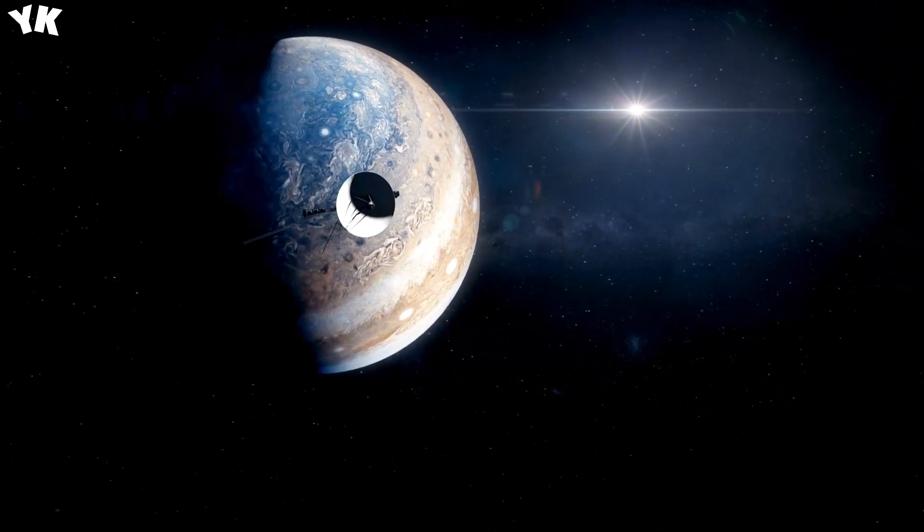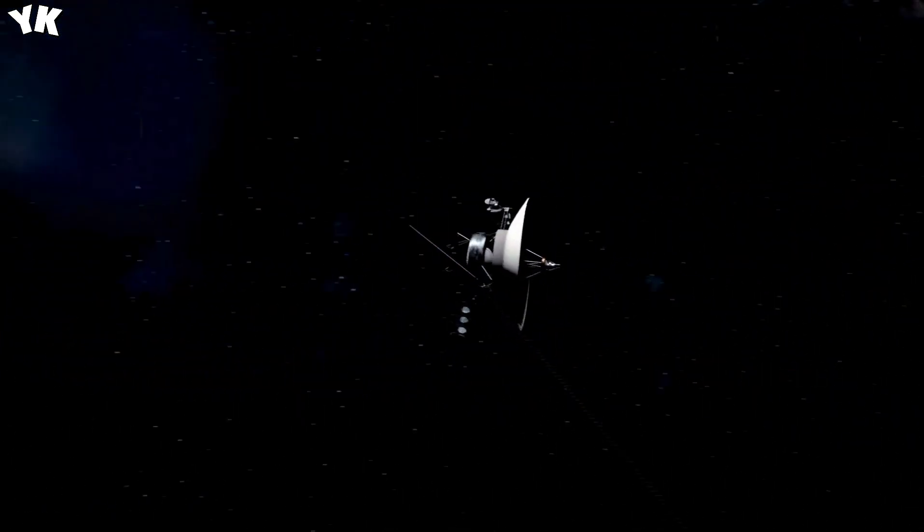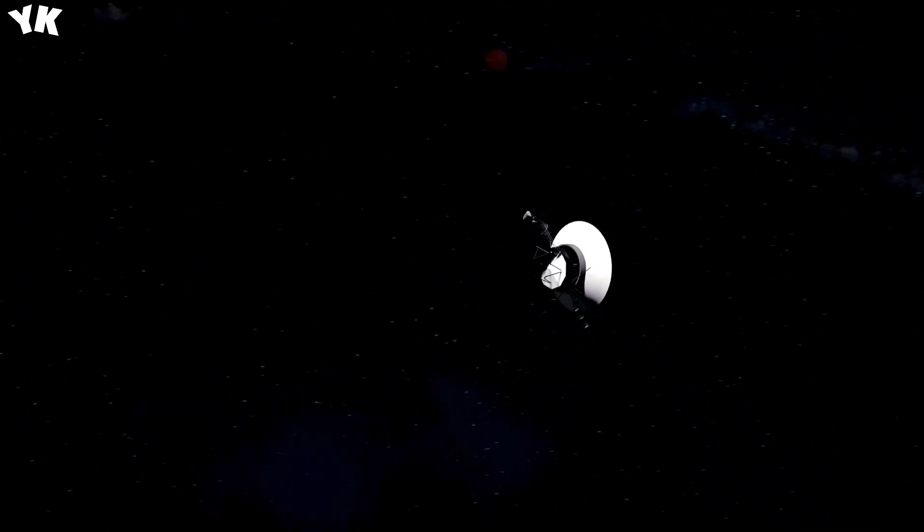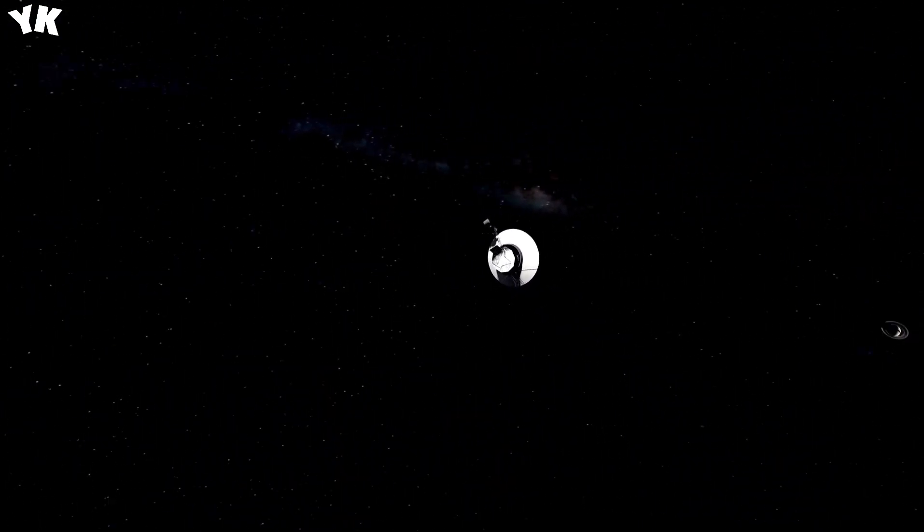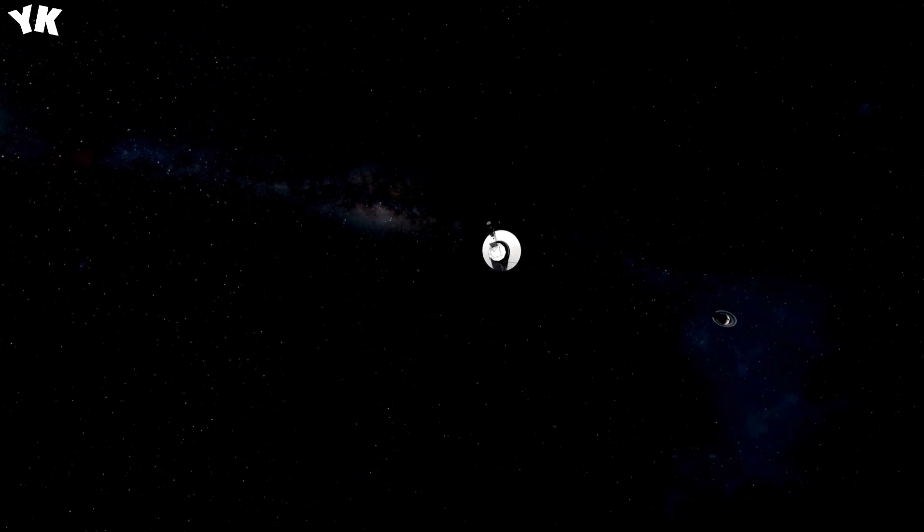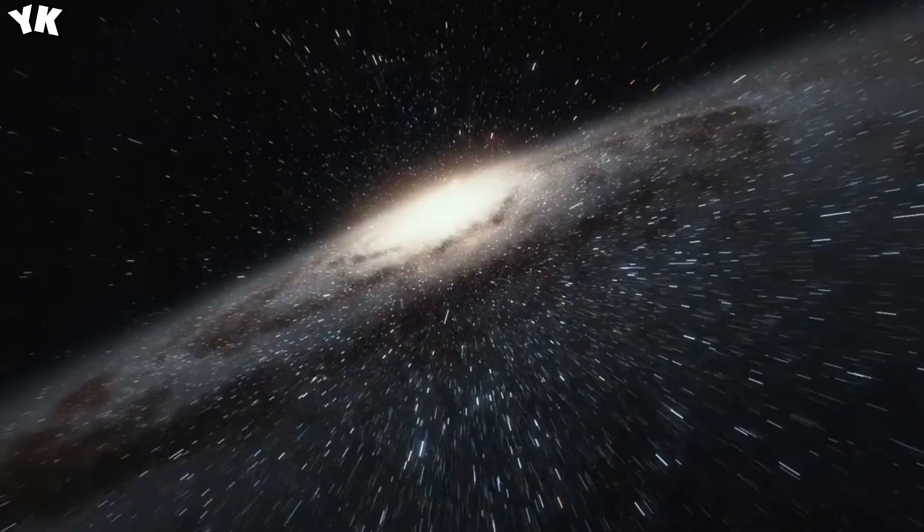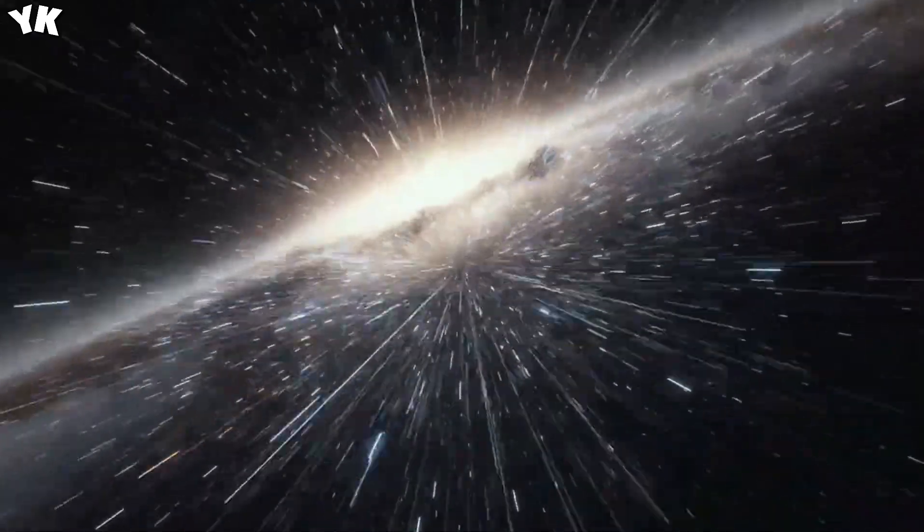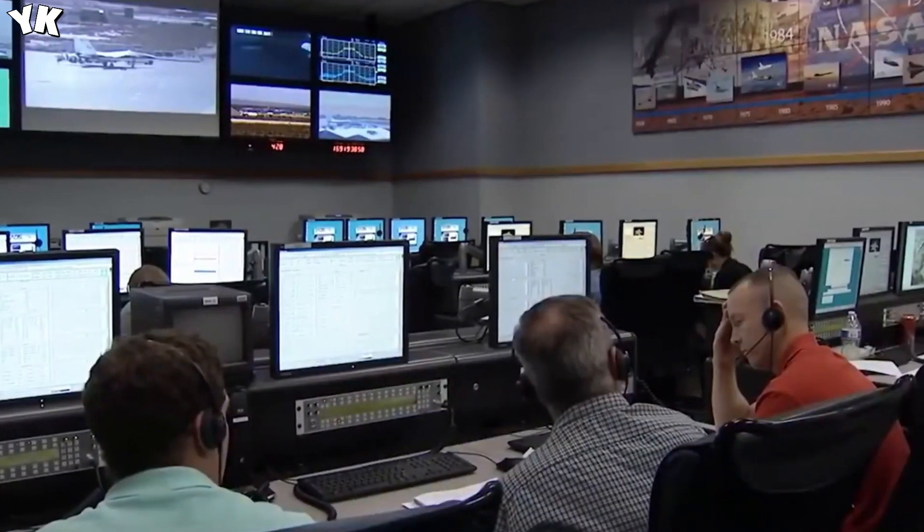Voyager 1, NASA's most trusted interstellar explorer, has just reported detecting 300 unknown objects passing through space. But before we unravel the mystery of these unidentified objects, let's first explore one of humanity's most remarkable space exploration stories.